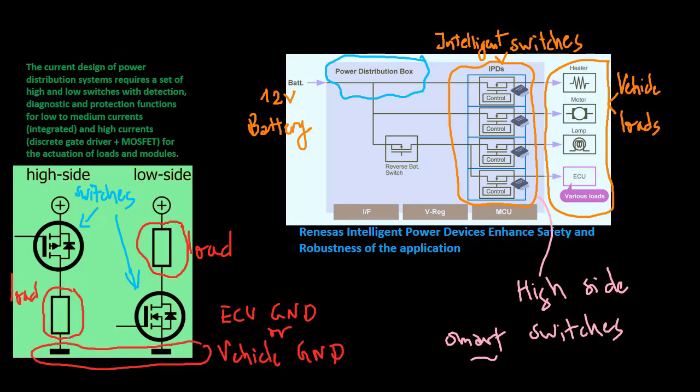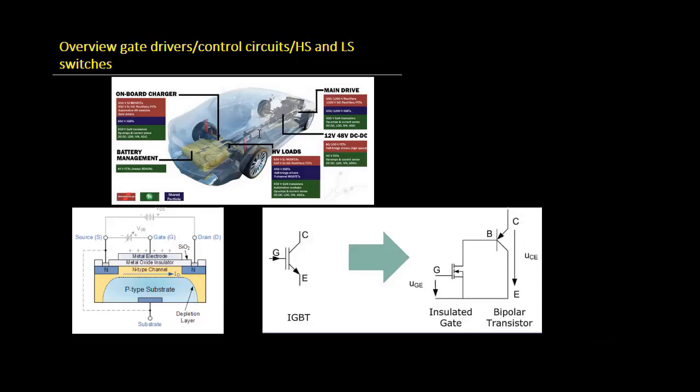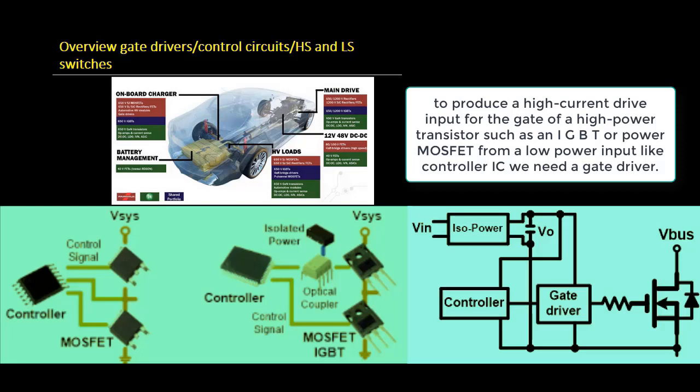The current hardware design of power distribution systems requires a set of high and low switches with detection, diagnostic, and protection functions. In electronics and power electronics for vehicles, MOSFETs and IGBTs are mainly used. The power MOSFET is the most common power semiconductor device in the world due to its low gate drive power and fast switching speed. The IGBT is a combination of BJT and MOSFET. To produce a high current drive input for the gate of a high power transistor such as an IGBT or power MOSFET from a low power input like a controller IC, we need a gate driver.